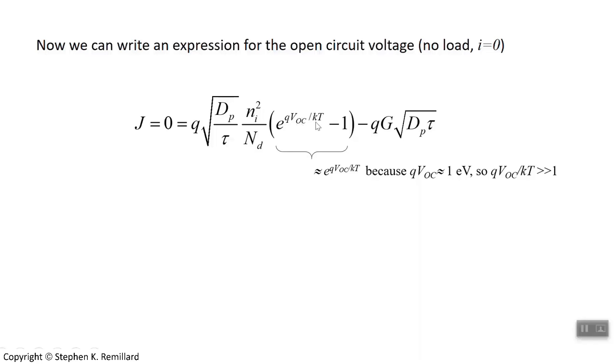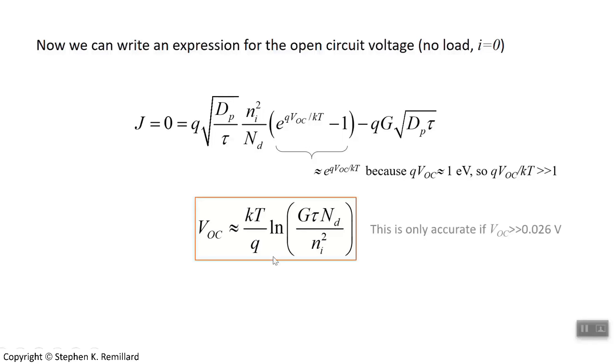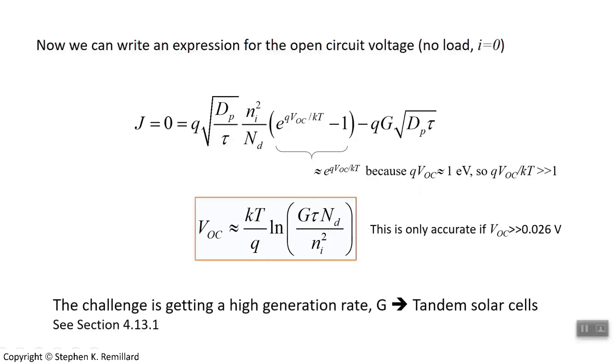E to the like one over point oh two six, as long as this exponential is much greater than one, we're going to get a usable solution here just by solving for v open circuit. So you solve for that under that condition. But again, it's only accurate if the open circuit voltage is considerably larger than kt, point oh two six volts.